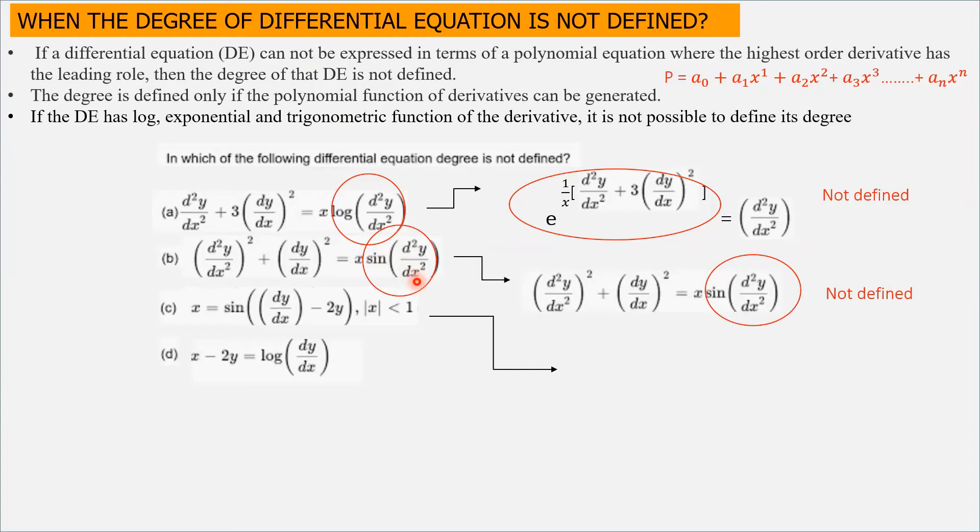As we already discussed, polynomials don't allow exponential or sine terms. Hence, the degree is also not defined for option B. Simply not defined.